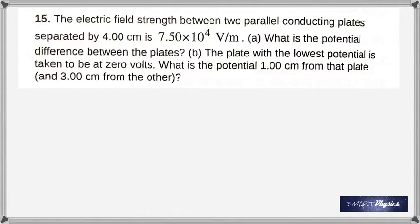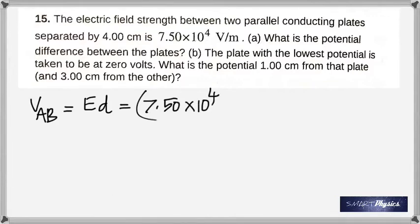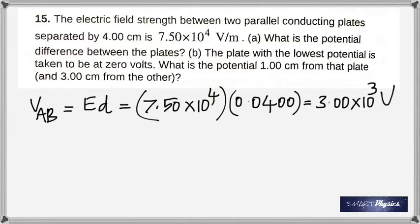The electric field strength between two parallel conducting plates separated by 4 centimeters is 7.50 times 10 to the 4 volts per meter. What is the potential difference between the plates? You have to remember that the potential difference is the product of intensity and distance. The intensity is given, so you get that as 3 kilovolts.